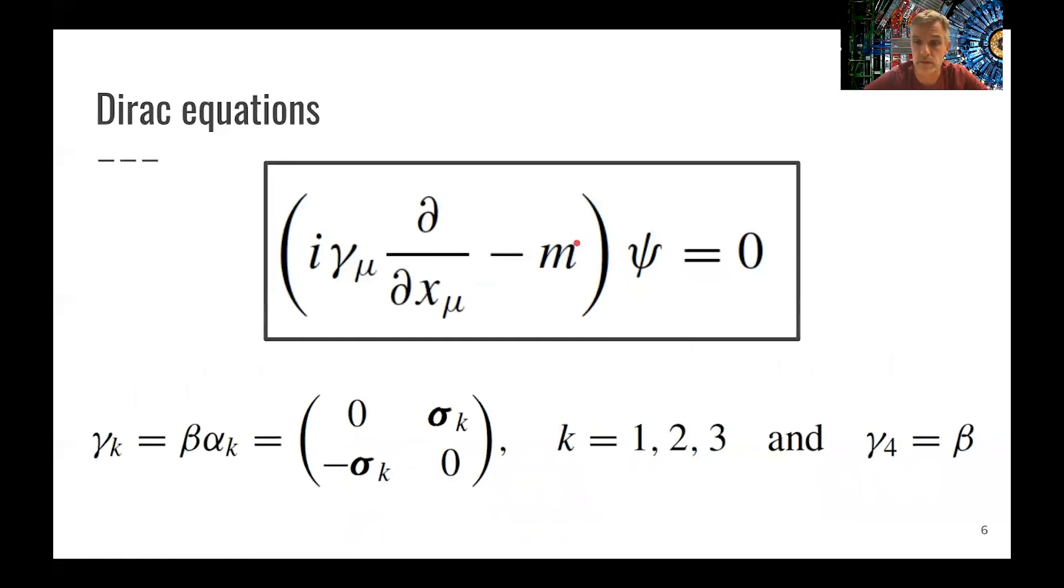With this, this is already the Dirac equation. We can rewrite the Dirac equation in a covariant form, where you have just defined a new matrix here, so-called gamma matrix, which you build out of this matrix beta and alpha, which are defined on the previous slide.